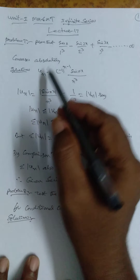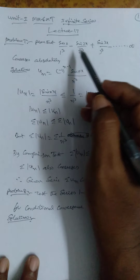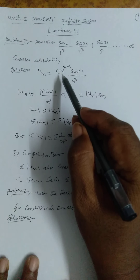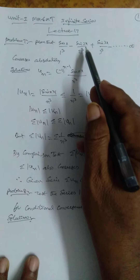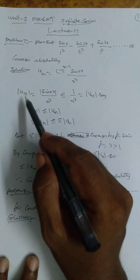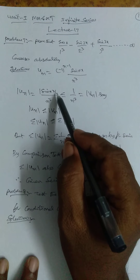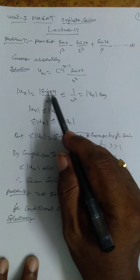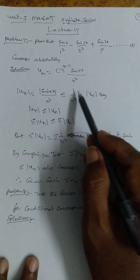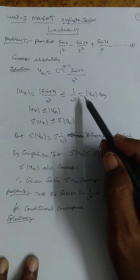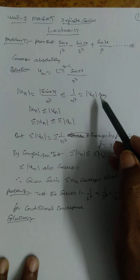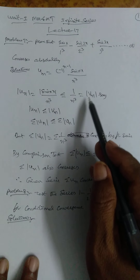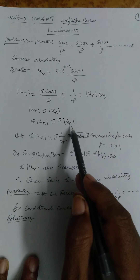Solution. u_n is an alternating series: (-1)^(n-1) · sin(x)/n³. So |u_n| = |sin(x)|/n³, which is less than or equal to the maximum value of sin(x), which is 1. So |u_n| ≤ 1/n³ = |v_n|. Therefore σ|u_n| ≤ σ|v_n|.